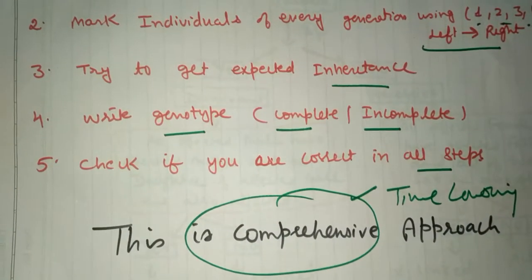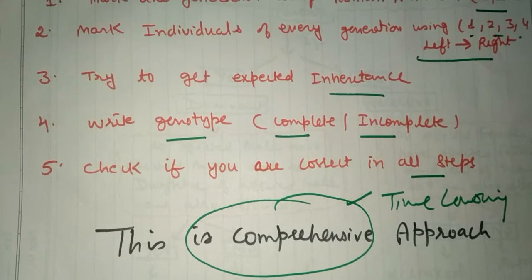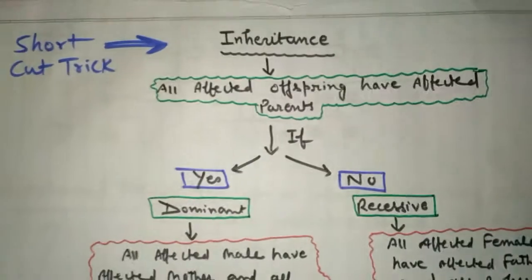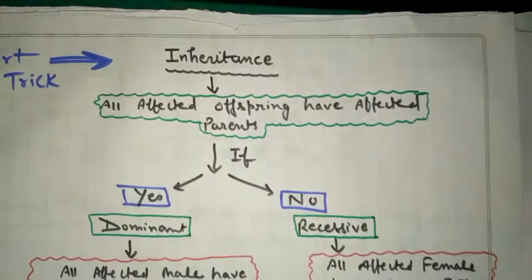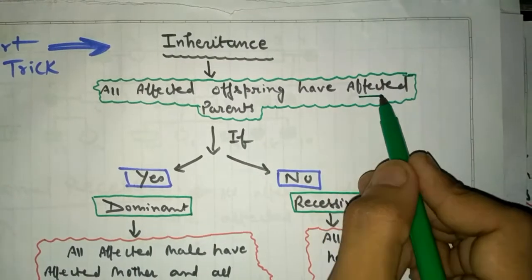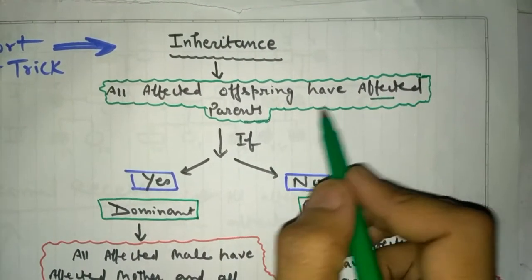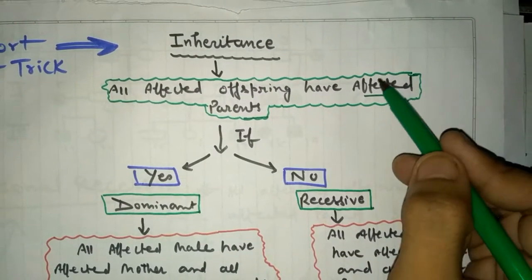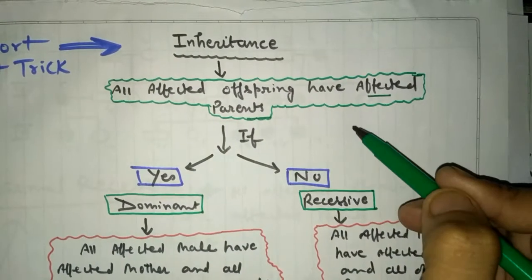Next I will tell you the shortcut that will help you estimate the pedigree within seconds. This is the shortcut trick. First of all, we will see if all affected offspring have affected parents - that is, the character coming from the affected mother or father and also occurring in the children.